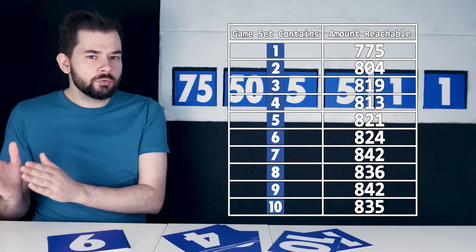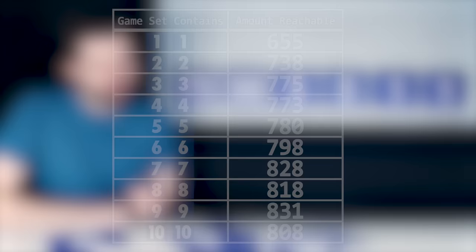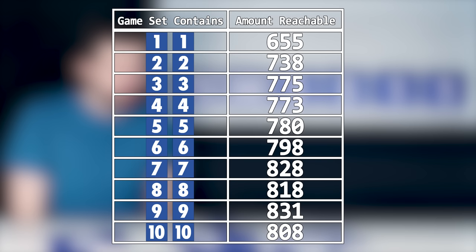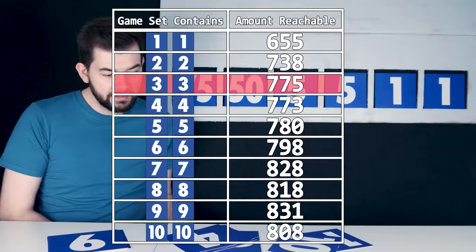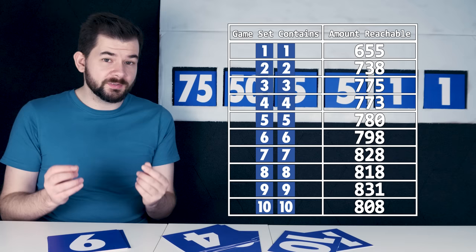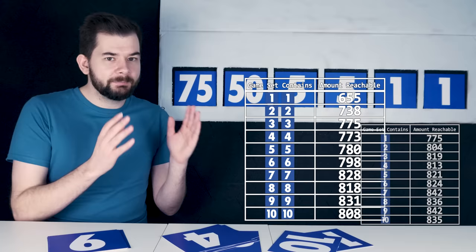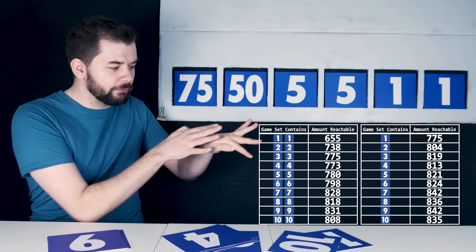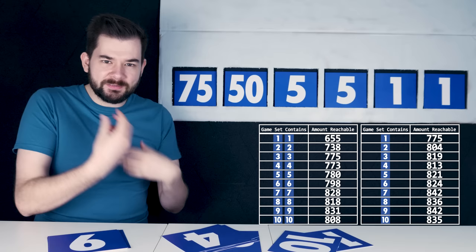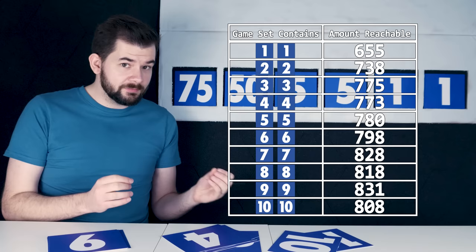First, let's look at how the pairs of small numbers do. So this table shows the average number of reachable targets among all game sets which happen to contain the pair of small numbers on the left. So again, let's look at that third row. Among all game sets which contain both threes, the average number of reachable targets is only 775. So as we discussed earlier, pairs of small numbers tend to do worse. And again, I think it's fairly intuitive as to why. Because with one of your small numbers, you can go in four different directions. But if you've got another copy of that small number, you're kind of repeating the action that that other small number affords you. So it kind of limits the overall reach of the set. So as we can see, game sets with pairs of small numbers tend to do worse, with a pair of nines being the best pair of small numbers that you can draw.